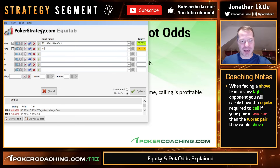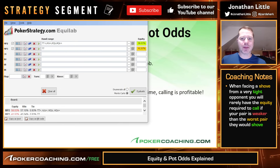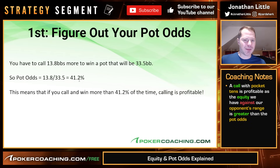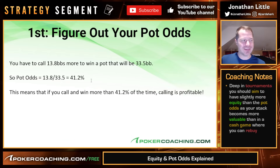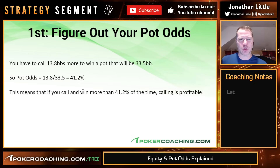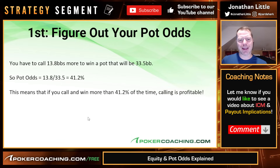What about pocket tens? That is close — 42%, and probably good enough to call. Now, if you are playing a poker tournament, you always want to have a little bit more equity than the break-even percentage. So instead of 41.2, maybe you want to have 42% to give yourself a little wiggle room and account for various payout implications. Sometimes there are bigger payout implications on a bubble, but we're discussing just straight figuring out your equity and pot odds and making correct calls.